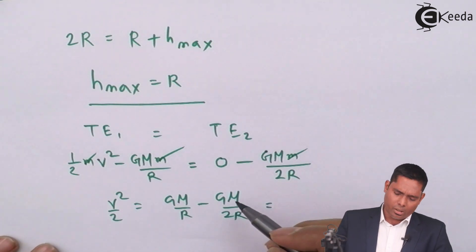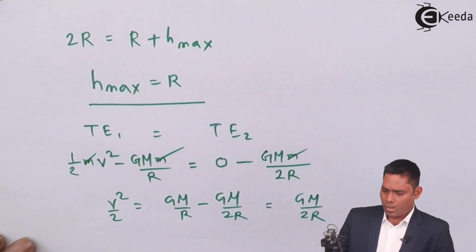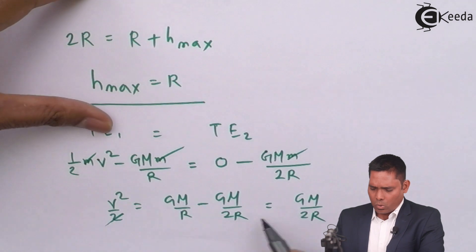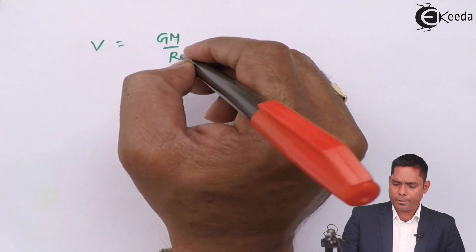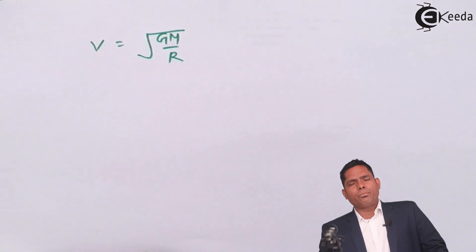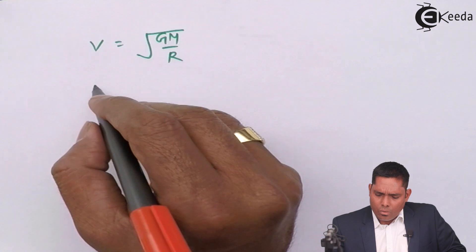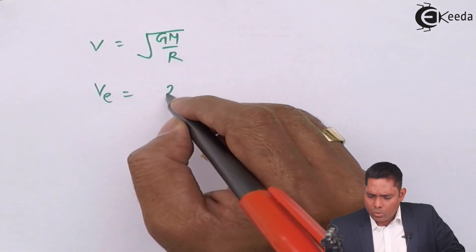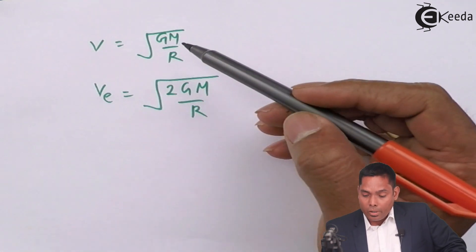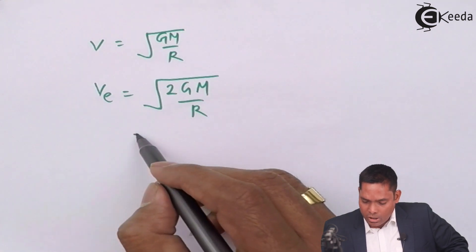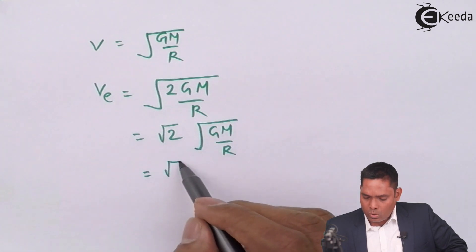From here, the velocity with which it is fired is √(GM/R), so it is fired with velocity equal to the orbital velocity. The escape velocity is √(2GM/R), which is √2 times √(GM/R), which is √2 times v.